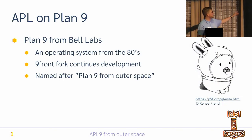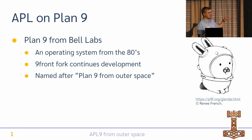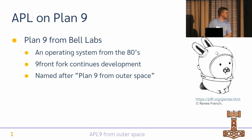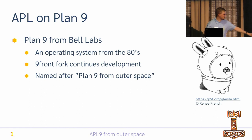Plan 9 is a research operating system that came out from Bell Labs. Development started somewhere in the 80s, with the first release maybe at the start of the 90s, and it sort of died out at some point. Some people made a fork called Nine Front, where they continuously add small enhancements such as drivers, so it continues to be usable. The name comes from a movie, Plan 9 from Outer Space — the same reason for the title of this presentation: APL 9 from Outer Space.